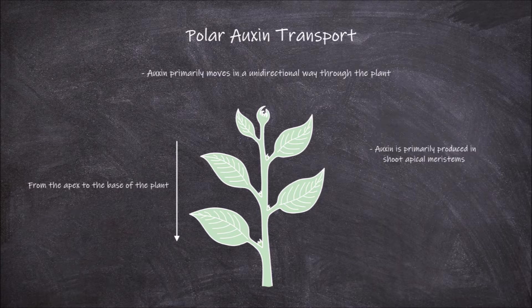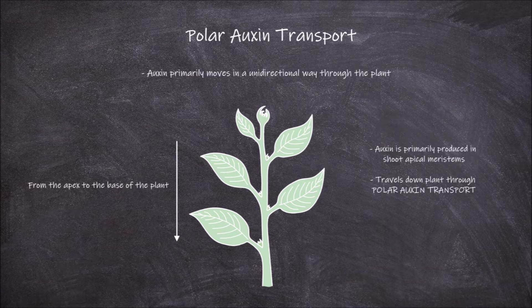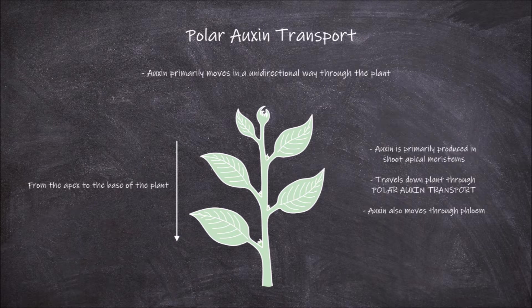Auxin is primarily produced in the apical meristems of the shoots, and this auxin travels from here down through the plant cells via polar auxin transport. It also moves through the plant via the phloem, as well as being produced on site in the roots.